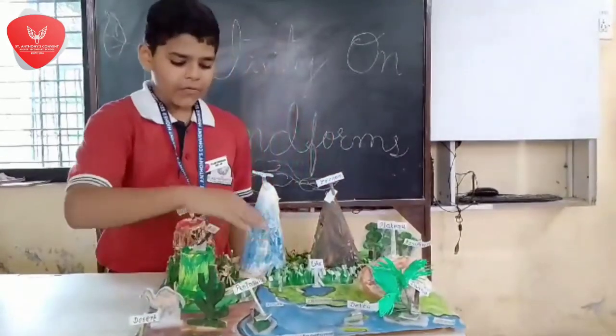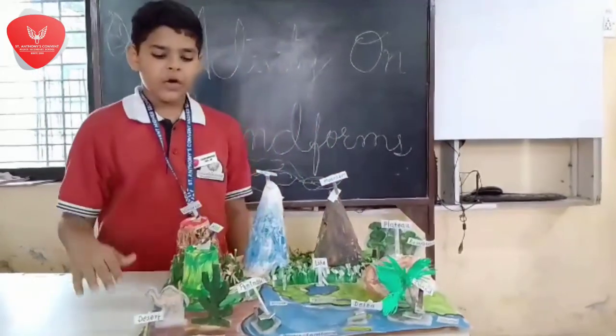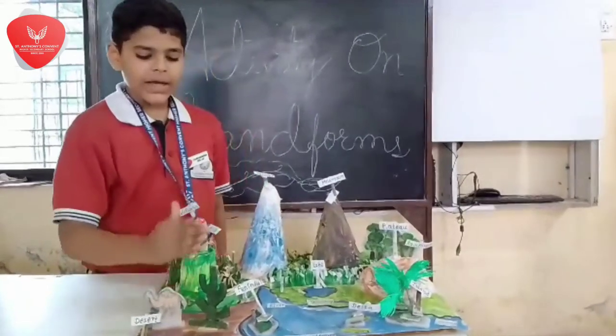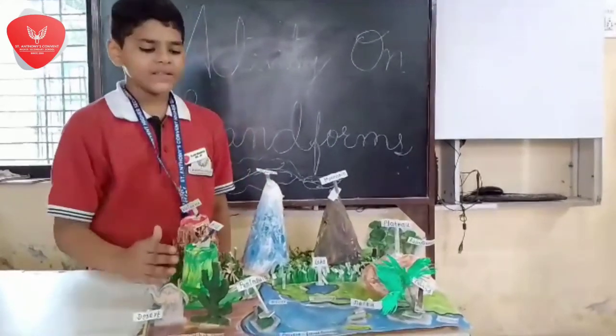Plains are the flattest surface on our earth. Hills are naturally higher than the surrounding area.